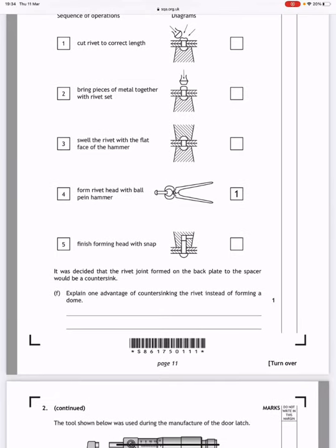Explain one advantage of countersinking the rivet instead of forming a dome. Well it might be the case that you're wanting it to be flat on one side. So instead of using a rivet that's got a round head on both sides, you could countersink the other side of the hole and rivet it so that it's flat on that side.